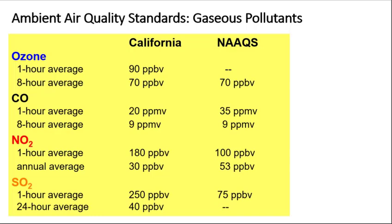The NAAQS and California air quality standards are listed here for the gaseous criteria air pollutant species. You don't need to memorize the precise values, but familiarize yourself with the main concepts. There are two parts to a standard for a given species: the concentration level and the averaging time. For example, ozone has both a one-hour and an eight-hour standard. The one-hour standard in California is 90 parts per billion, and the eight-hour standard — both California and the federal NAAQS — is 70 parts per billion.